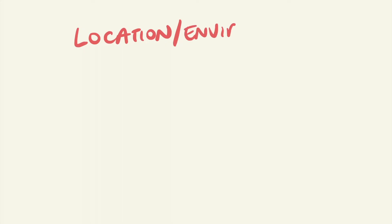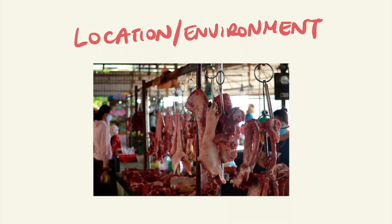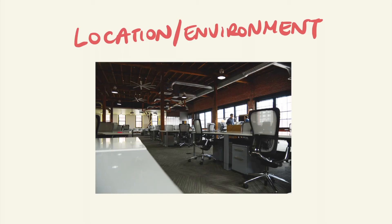The location and environment can also be important. Vector-borne diseases can be more prevalent depending on the geographical location, such as malaria which is endemic throughout most of the tropics. Socio-economic factors as well as certain cultural practices can also lead to susceptibility to certain infections. For example, wet markets can lead to the increased risk of zoonotic infections as well as food and water contamination. Indoor workplaces can also be potential sources of biological hazards, particularly in enclosed spaces, areas with central air conditioning, and areas with public objects or spaces.